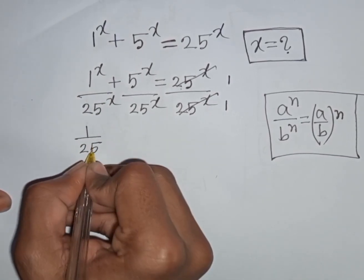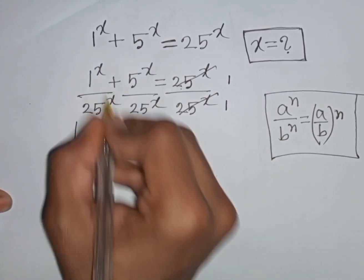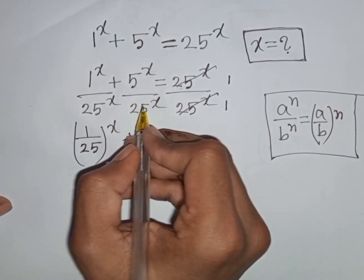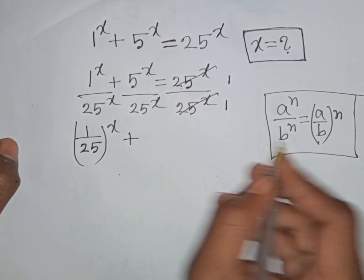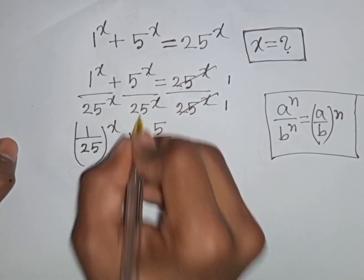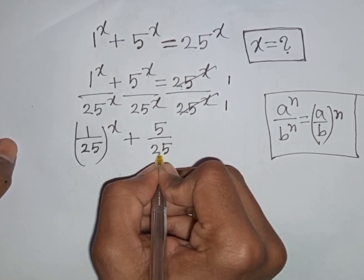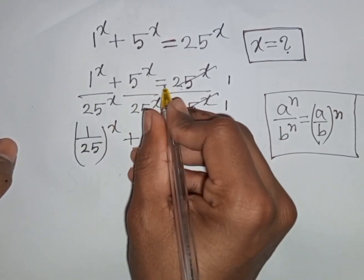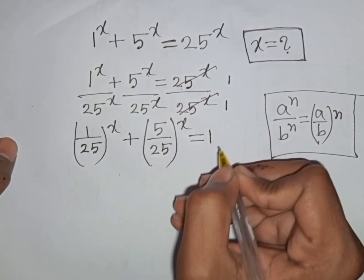So here, same power x but different base. According to this formula, I can write (1/25)^x plus (5/25)^x is equal to 1. Since 25^x / 25^x = 1.